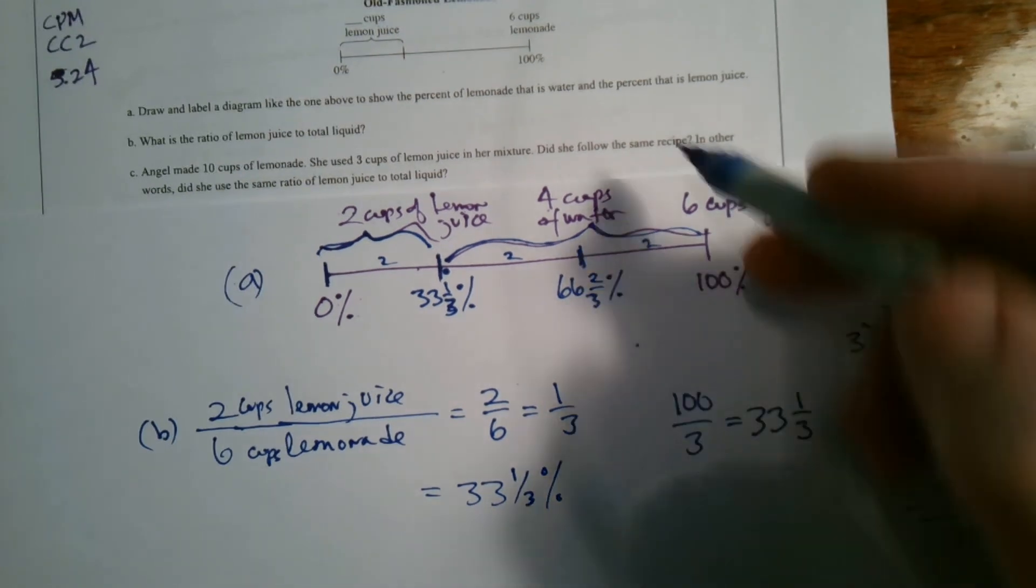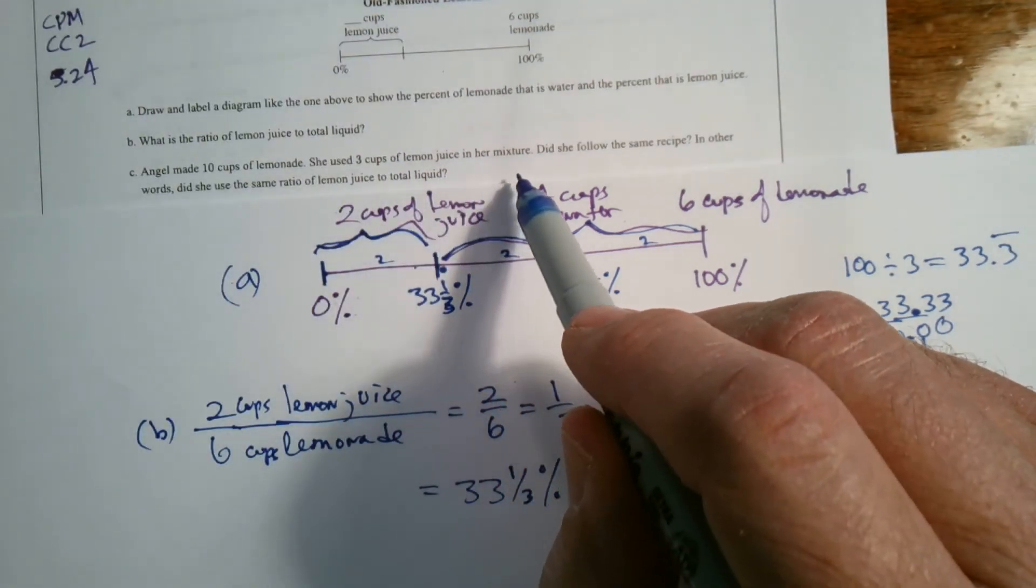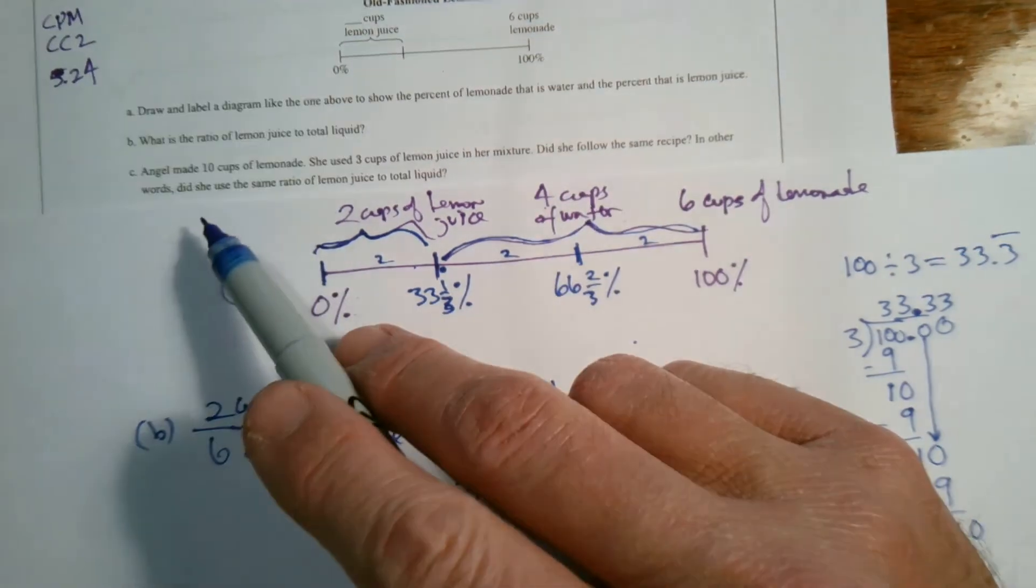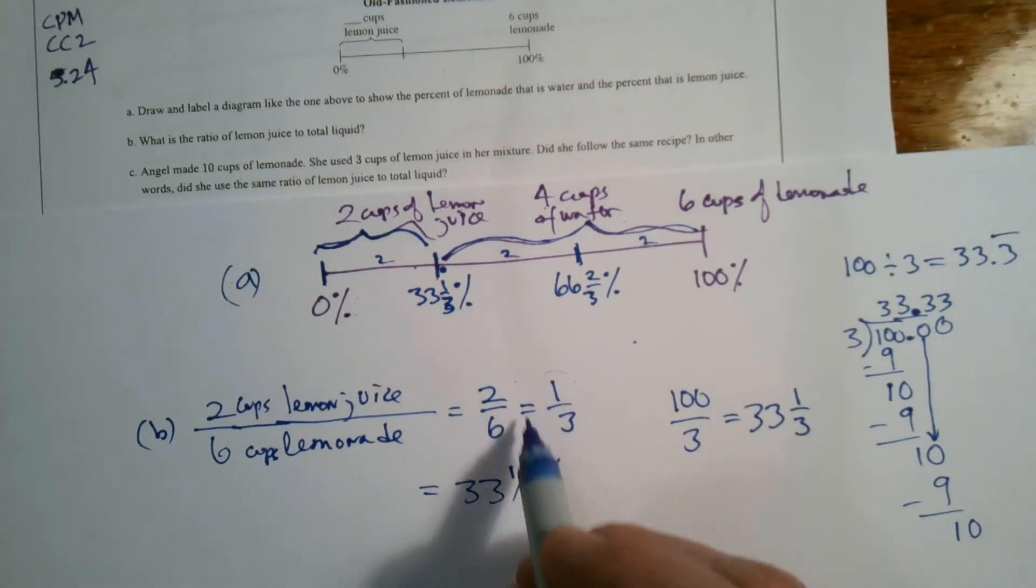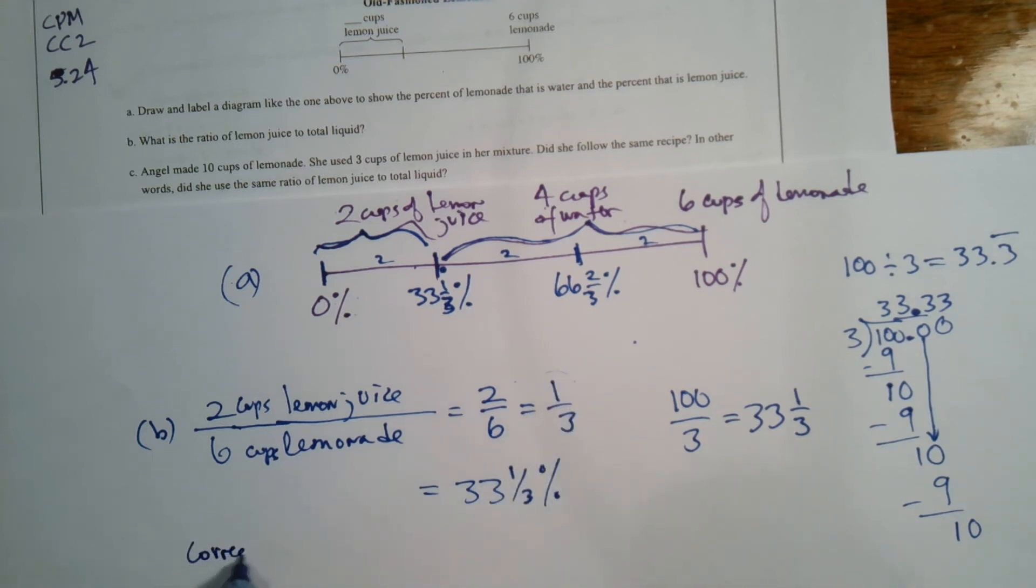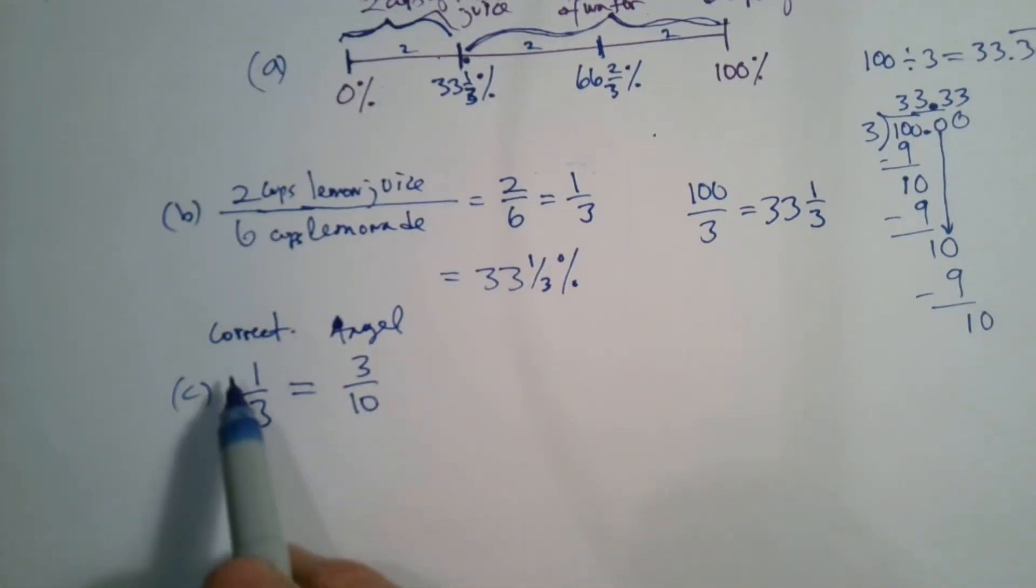So Part C says, Angel made 10 cups of lemonade. She used three cups of lemon juice in her mixture. Did she follow the recipe? In other words, did she use the same ratio of lemon juice to total liquid? Well, what did we determine? We determined the lemon juice to total liquid was one to three. So the correct is one to three, but Angel used three to ten. So the question is, is 1/3 equal to 3/10? Are those the same?